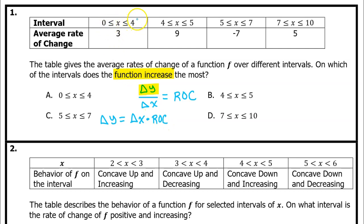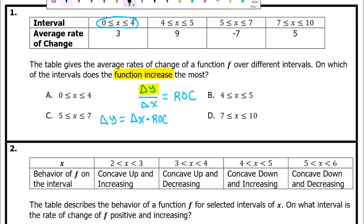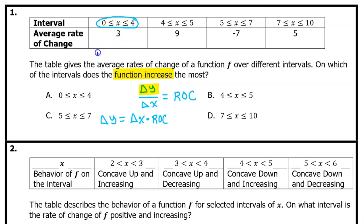This will be useful because we have both of those pieces of information. For example, for the first interval, we see that the width of the interval from 0 to 4 — that's a width of 4. So that's delta x. If we multiply that by the rate of change that they gave us, we get 12. So that is the increase of the function for this interval — that's delta y.